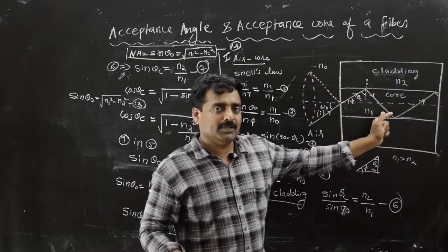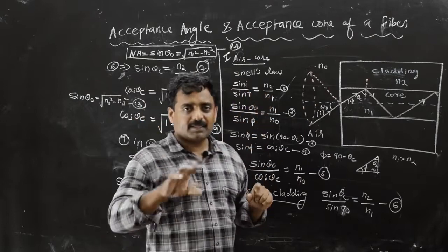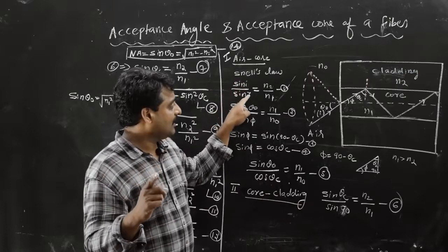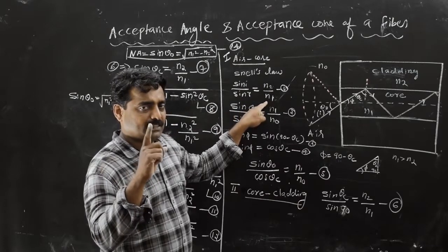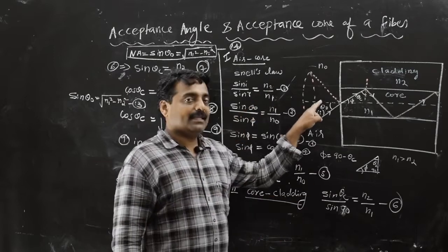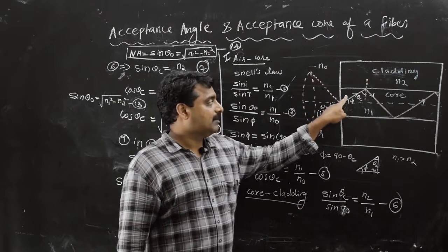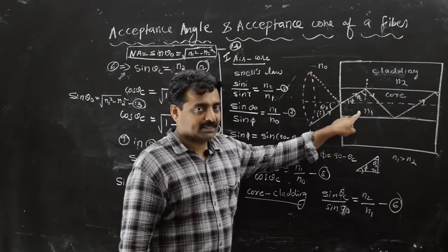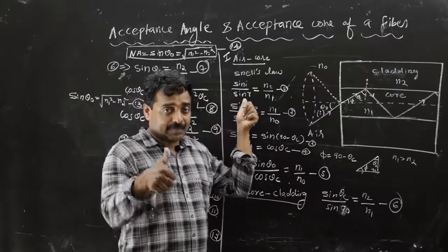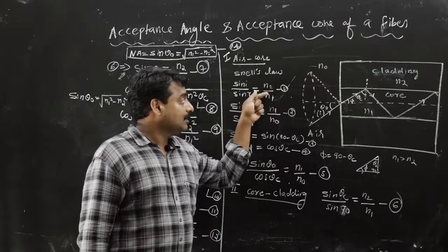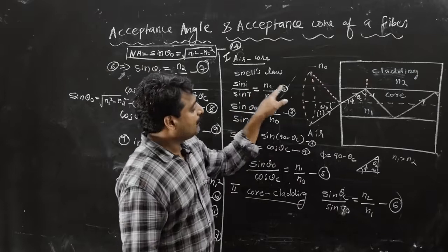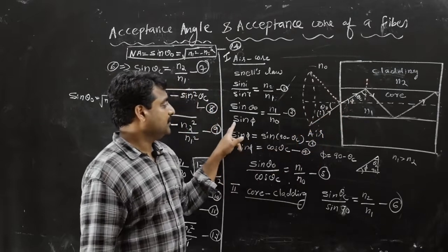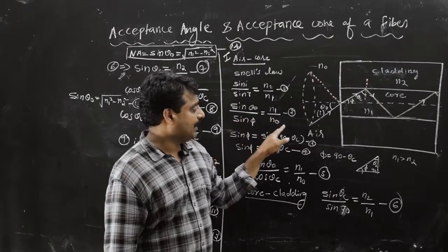First we have the air-core interface. By total internal reflection, we apply Snell's law: sin i by sin r equals n2 by n1, where n1 is the first media refractive index and n2 is the second media. So at the air-core interface, n1 is n0 and n2 is n1. That is equation number 2.